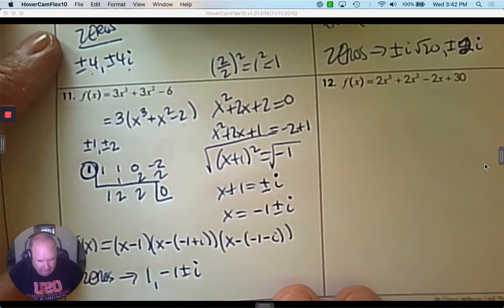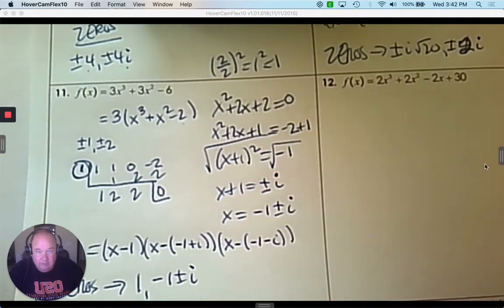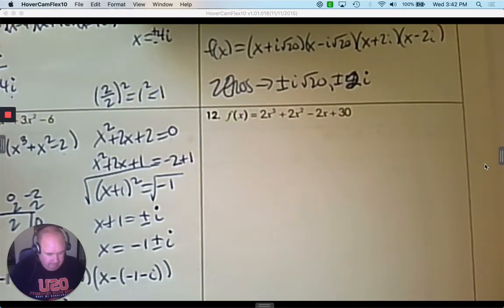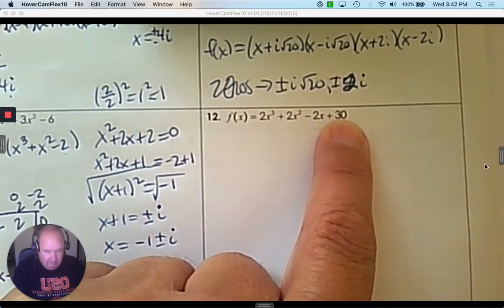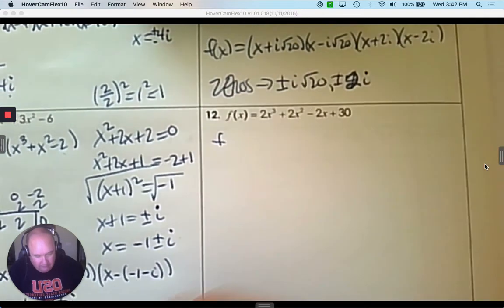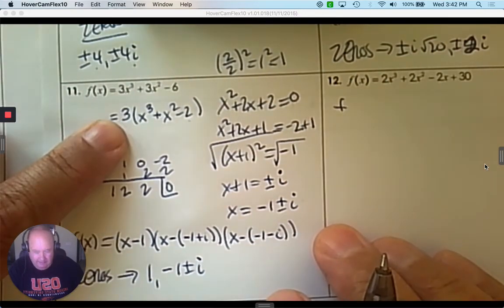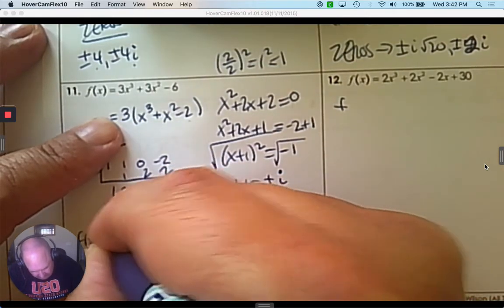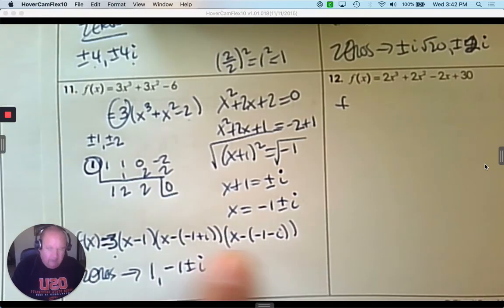It's a little bit challenging — it's okay to go back and watch again from the beginning if you want to review it. Number 12. Notice that 2 goes into everything evenly — that makes life so much easier. Going back to number 11, don't forget there needs to be a 3 in front of the linear factorization. For number 12, I'm going to factor out a 2 — I can't get rid of it, I just factor it out in front. Divide 2 out of everything.